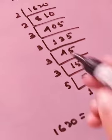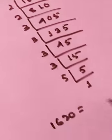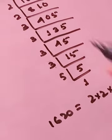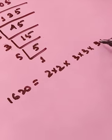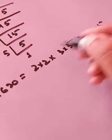So 1620 is equals to, 1, 2, 2, 2s are there. How many 3? 1, 2, 3, 4, 4 3s are there and 1 5. So which is unpaired.